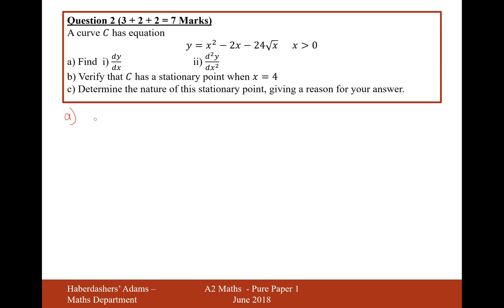For part A, we need to differentiate this function. The bit I need to sort out is this square root of x — I need to turn that into 24x to the power of a half. Now I can differentiate it. I'll bring the power to the front and then reduce the power by 1. So we get 2x to the power of 1 minus 2, and then minus 12x to the minus half.